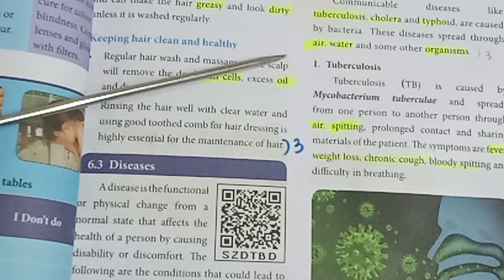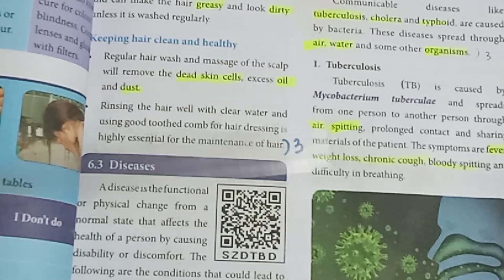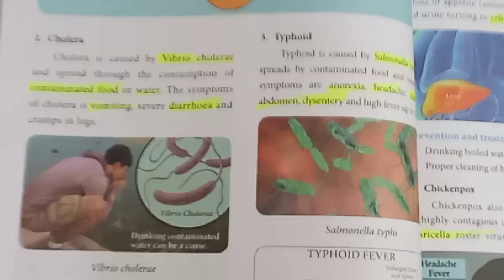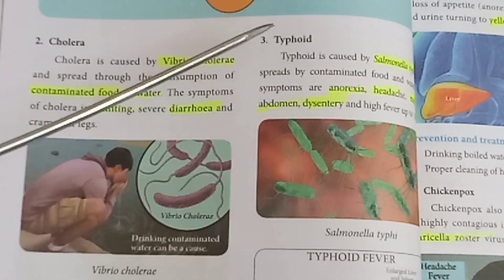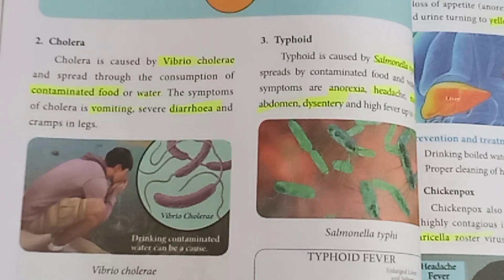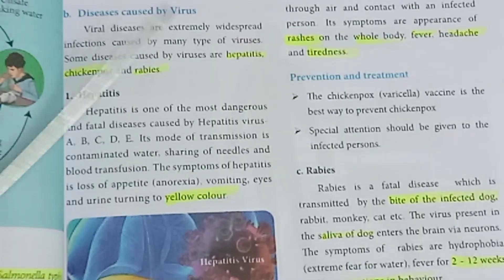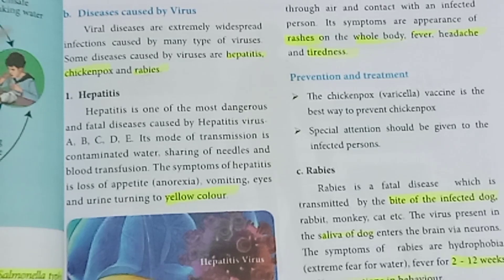Question 42: Write about diseases. Tuberculosis — refer to page number 79. Cholera — page number 80. Diseases caused by virus include hepatitis. All the best!